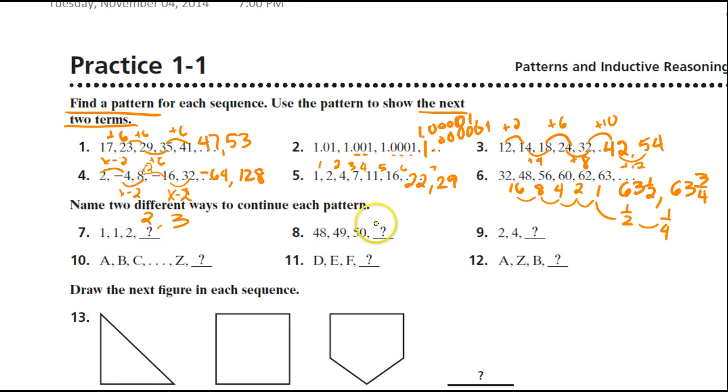48, 49, 50, 51. Is there any other way that you can continue that pattern? Here's a difference of 1. This is a difference of 1. I don't know. What did you come up with?